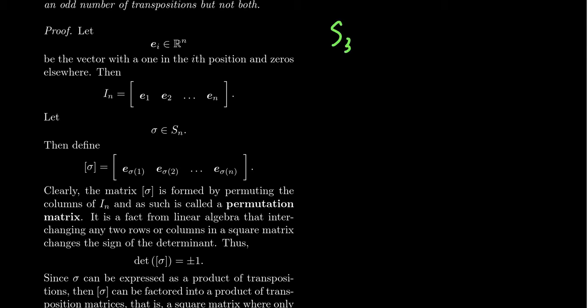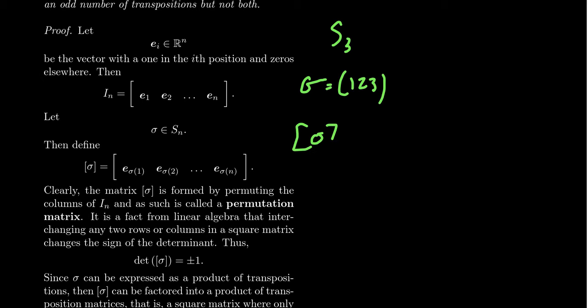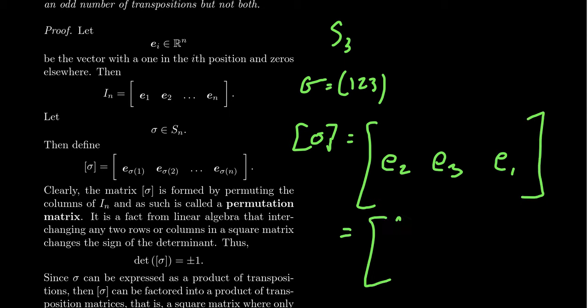Let's do an example in S_3. Take sigma = (1 2 3) as a 3-cycle. Then [sigma] is the matrix where the first column becomes e_2, the second column becomes e_3, and the third column becomes e_1. This gives the matrix with columns (0,1,0), (0,0,1), (1,0,0).